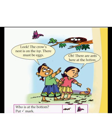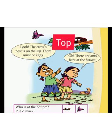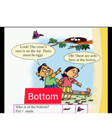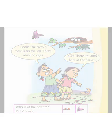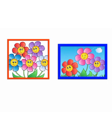Look — here there is a crow's nest on the top of the tree. We know there must be eggs there. We can see some ants at the bottom of the tree. Now put a tick mark on who is at the bottom in this picture. The crow's nest is on the top of the tree, but the ants are at the bottom of the tree.